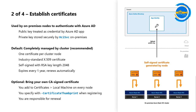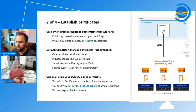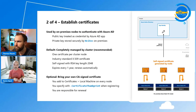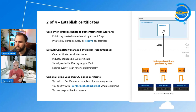We know that some customers have a mandate — they cannot use self-signed certificates and have to use their own. That's why we provide a second experience. For that, you go to each node under Certificates, Local Machine, and add the certificate from your CA. Then when you register, you specify the -CertificateThumbprint flag and provide that thumbprint in the command.